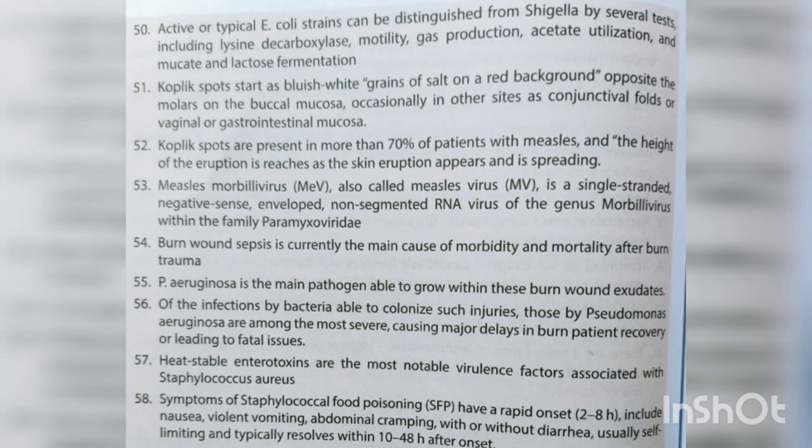Active or atypical E. coli strains can be distinguished from Shigella by several tests including lysine decarboxylase, motility, gas production, acetate utilization, mucate, and lactose fermentation.